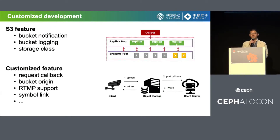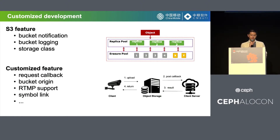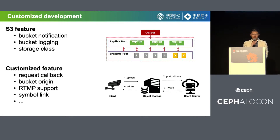In the public cloud, cloud storage must have rich features. Users will compare your product with others and choose the one that meets their requirements. So based on Ceph, we developed some features. Some of them are S3 features not yet implemented in Ceph, like bucket notification, bucket logging, and storage class.